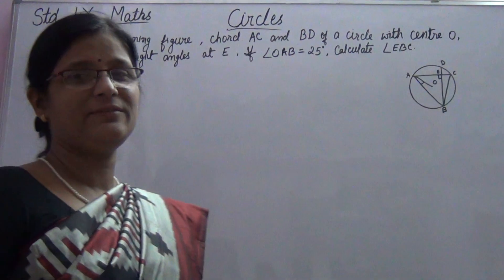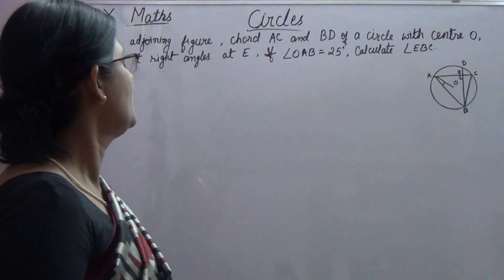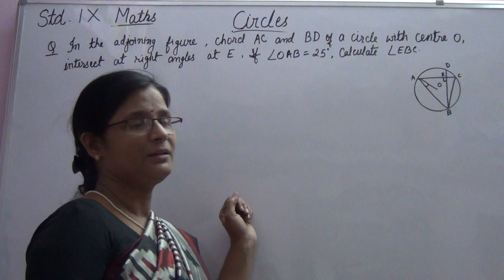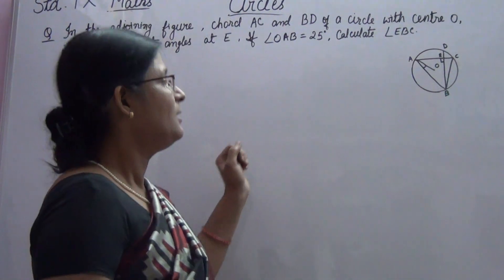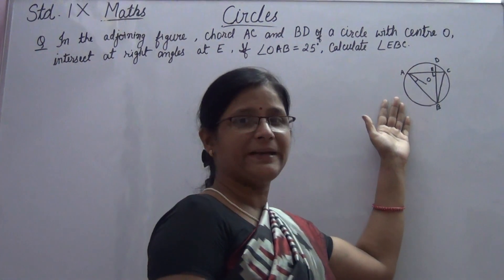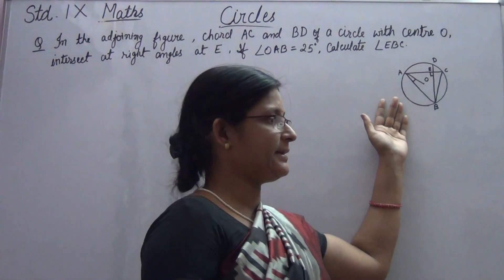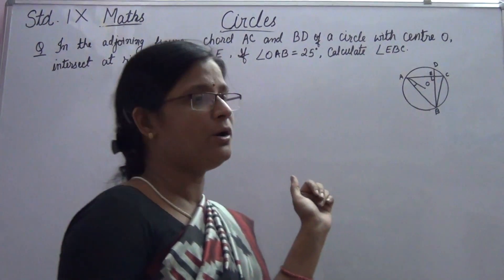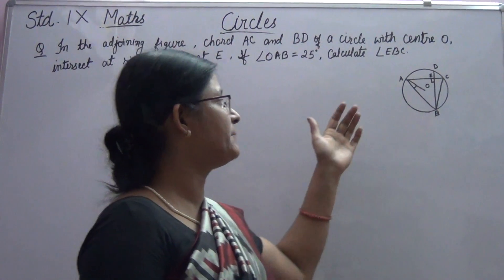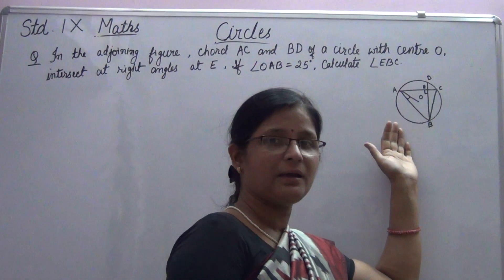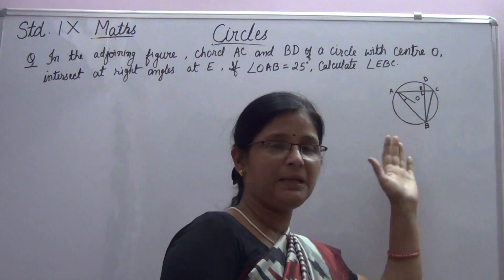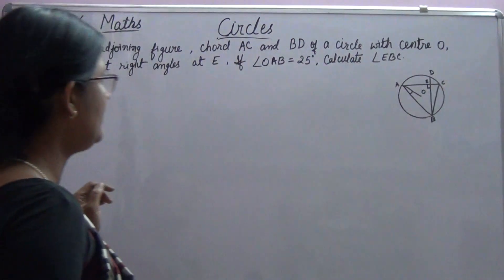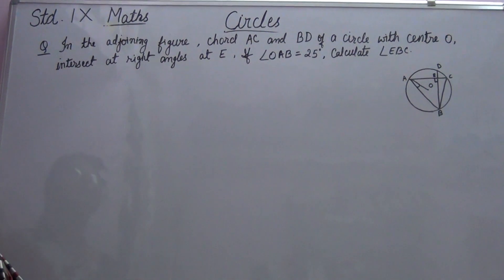Let us start solving sums which are based on the theorem that the angle subtended by an arc at the center is double the angle subtended by the same arc at the remaining part of the circle. Here I have a question for you.